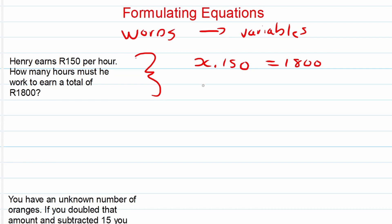So what's the unknown x? Well we can say, what times 150 is equal to 1,800? If we do a quick calculation, we can just say 1,800 divided by 150, and that should be equal to 12. So therefore through inspection even, we can see that Henry works 12 hours to receive 1,800 rand.